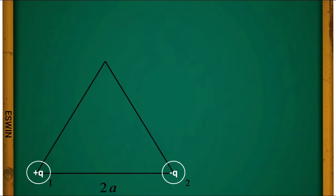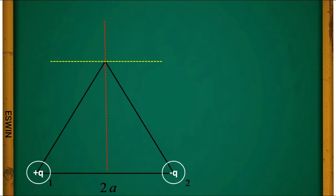Let us take a dipole of magnitude q where the distance between the charges is 2a. We are asked to find out the electric field at a point on its equatorial line. Let us imagine there is a point P at a distance r from the center of this dipole.